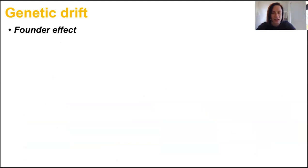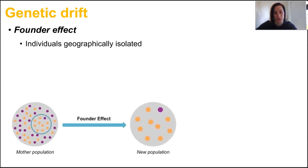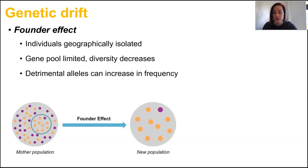The founder effect occurs in a really similar manner to the bottleneck effect, but it occurs when a few individuals move to a new area and become geographically isolated from their larger population. And this makes the gene pool become really limited. So diversity decreases. And this means that anything that's a detrimental recessive allele that's sitting in there in their gene pool is going to suddenly increase in frequency.